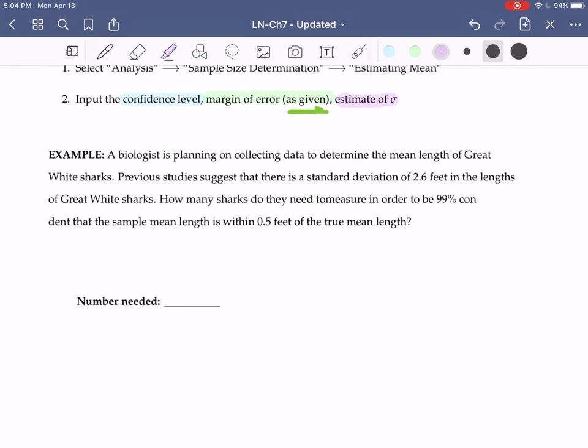Let's take a look at our example. Here we have a biologist planning on collecting data to determine the mean length of great white sharks. Previous studies suggest that there is a standard deviation of 2.6 feet in the lengths of great white sharks. How many sharks? That's our question, how many. We're trying to determine a sample size, so that's the keyword I clue in on.